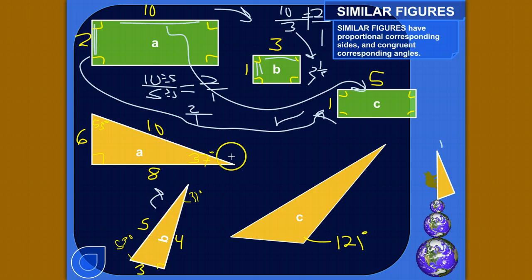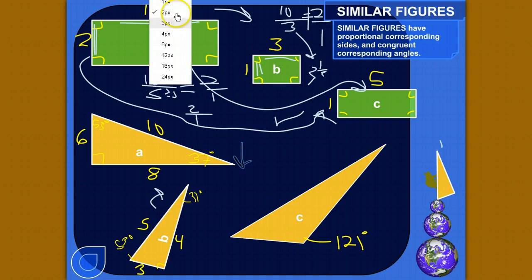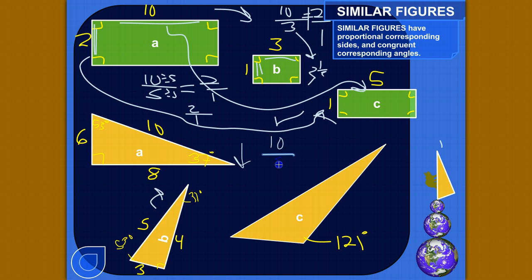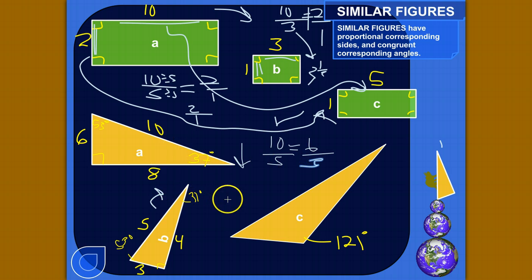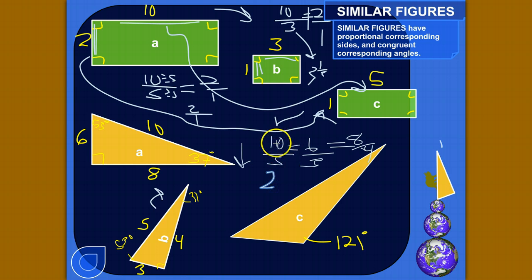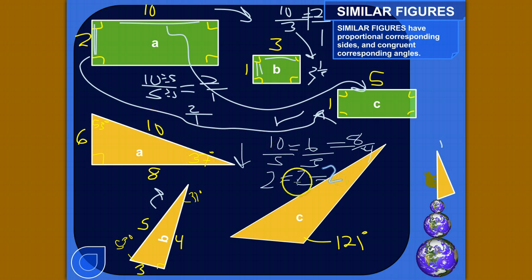These two sides correspond, so: 10 to 5. Is that the same ratio as 6 to 3? And then our last pair: 8 to 4. Well, 10 over 5 reduces to 2 over 1. 6 over 3 is also equal to 2. And 8 divided by 4 is 2. So these ratios all have the same value — they're proportional.